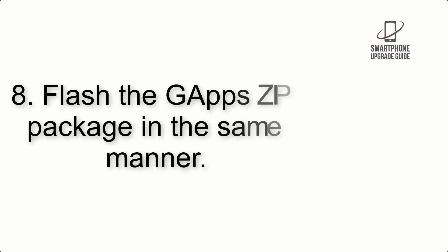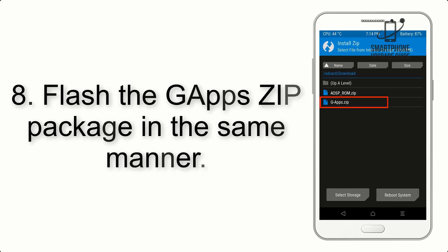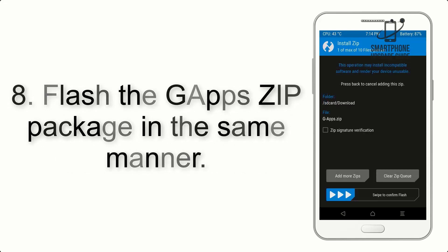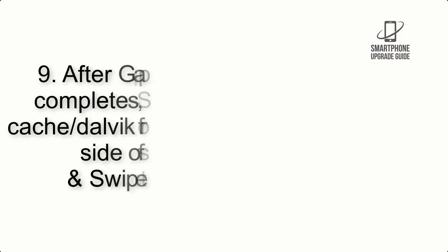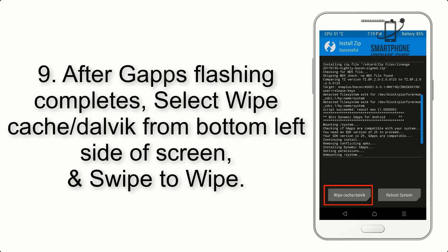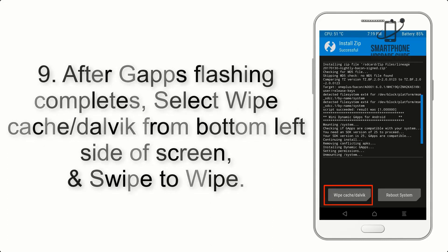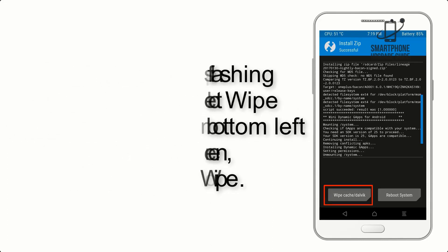Step 8: Flash the GApps ZIP package in the same manner. Step 9: After GApps flashing completes, select Wipe Cache and Dalvik from the bottom left side of the screen, and swipe to wipe.